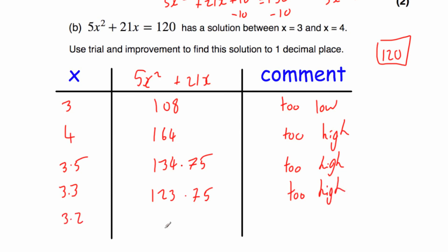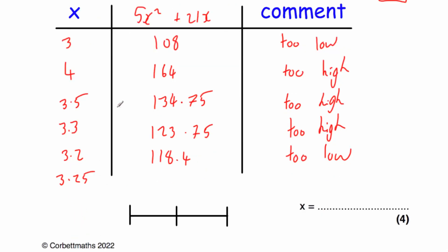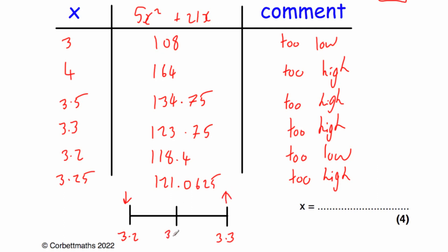Let's try 3.2: that gives 118.4 — too low. So let's try the checker 3.25: 5 times 3.25 squared plus 21 times 3.25 equals 121.0625 — too high. So 3.2 is too low, 3.3 is too high, and the checker 3.25 is also too high. Our answer is between 3.2 and 3.25, so it's closer to 3.2 than to 3.3. The answer is 3.2 centimeters.